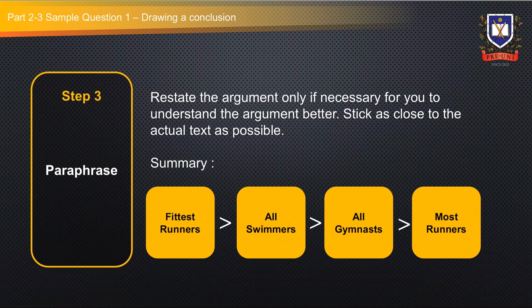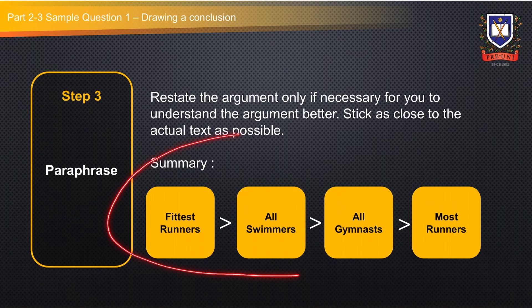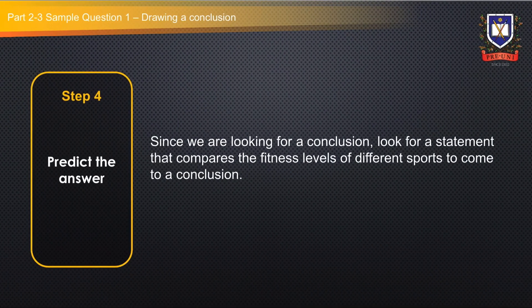Step three is to paraphrase the argument if you need to understand it better, remembering to stick as close as possible to the actual text. The information has been organised visually to better understand the logic of the question. The fourth step is to predict the answer. Since we are looking for a conclusion, look for a statement that uses the information in the argument to make some form of conclusion — in this case, a statement that compares fitness levels of different sports.